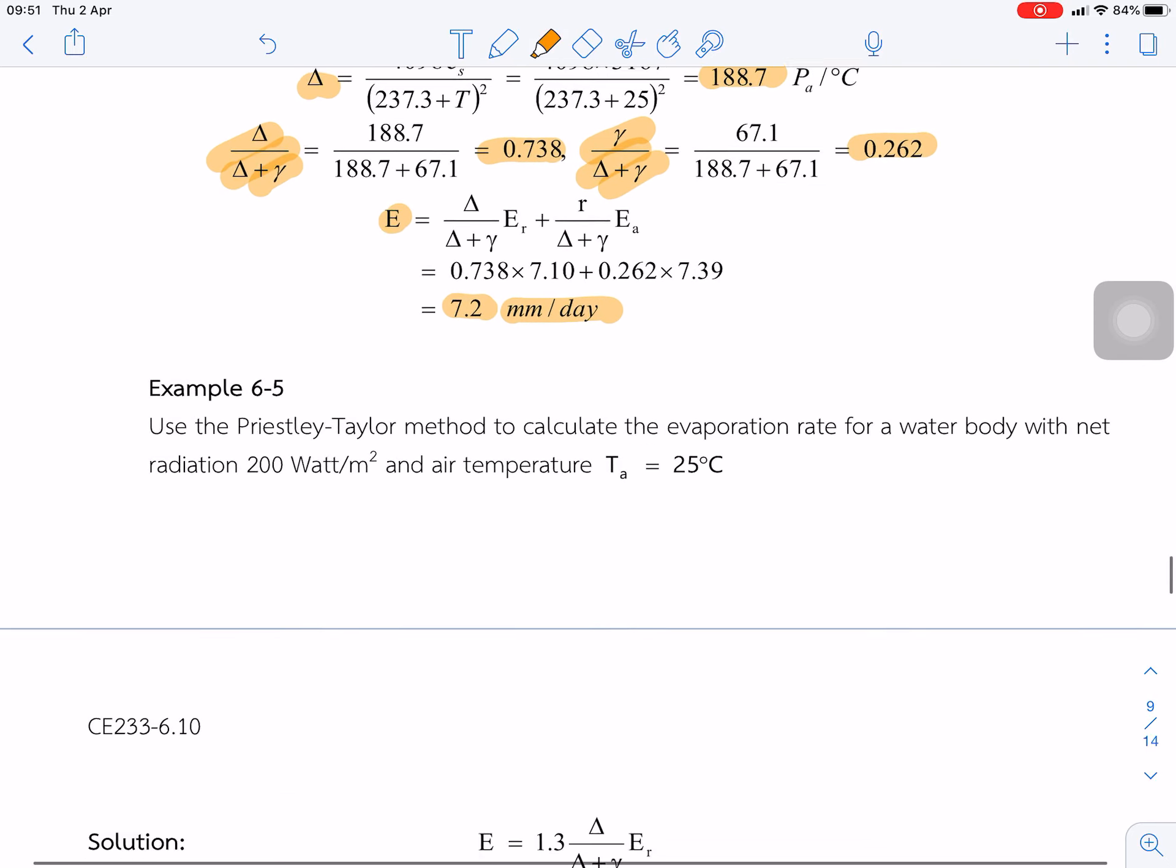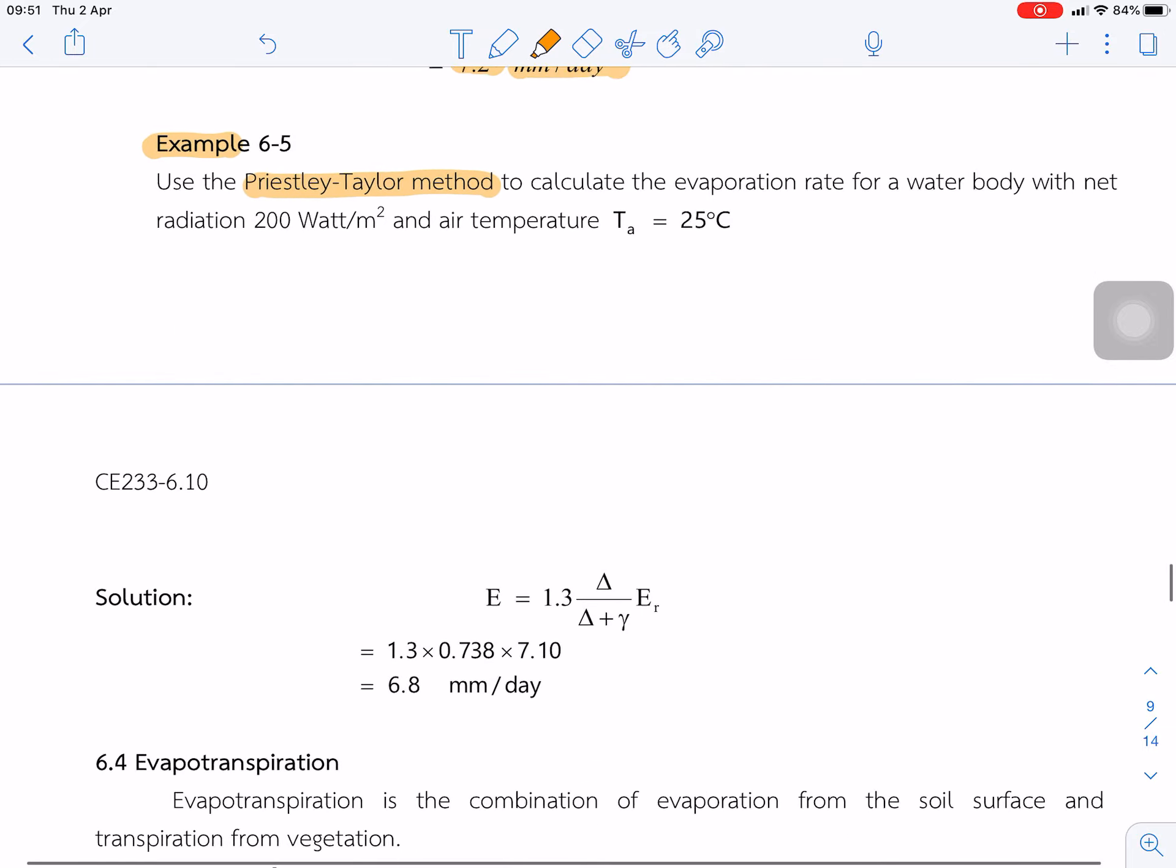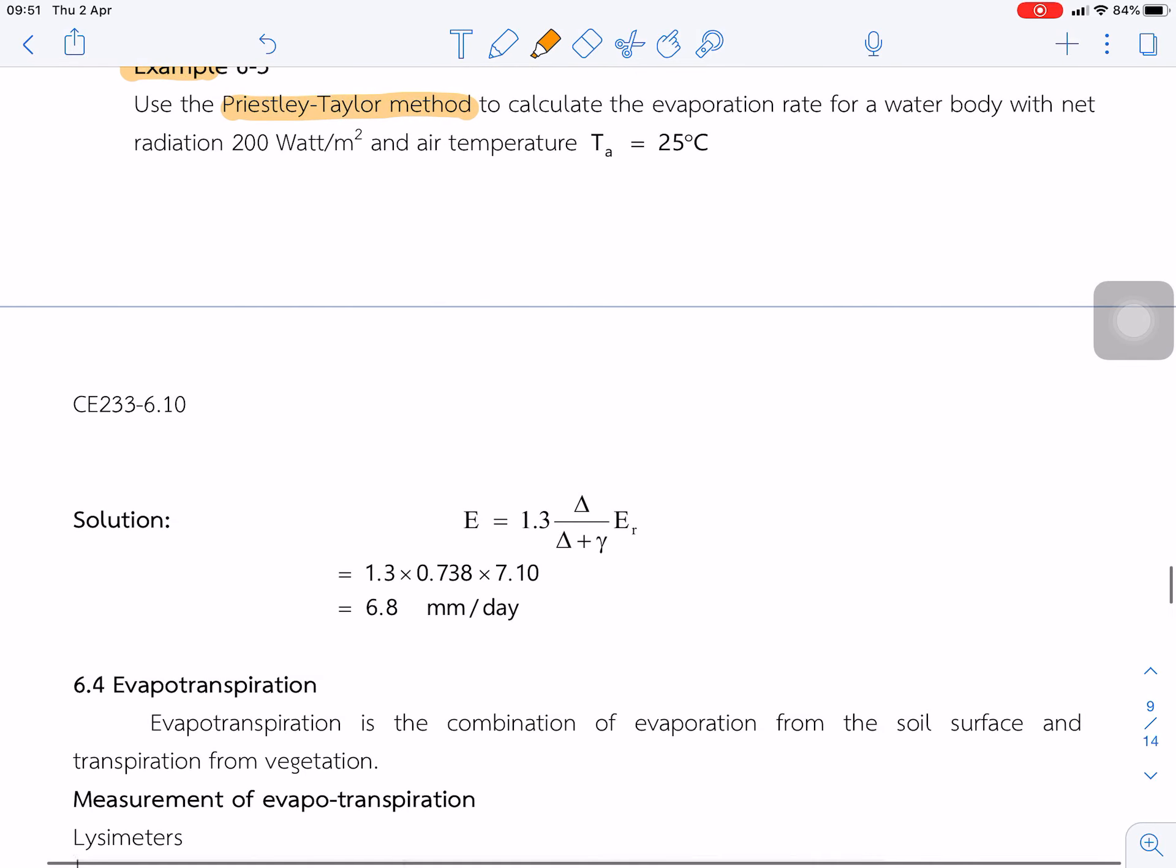And an example for the Priestley-Taylor method. So we just use only the first term and multiply by alpha 1.3. So we got 6.8 mm per day.